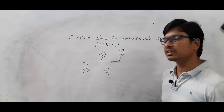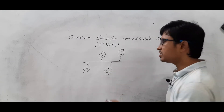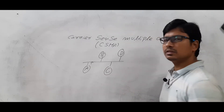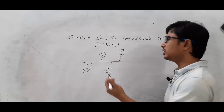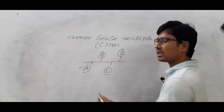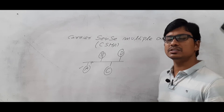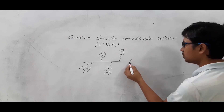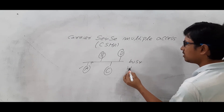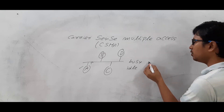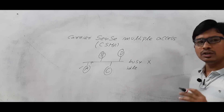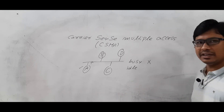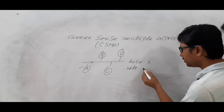If any node wants to transfer the data to any other node, first they need to sense the channel. If the channel or transmission medium is free, then only the node is allowed to transfer the data. Whenever you are sensing the medium or channel, you will get two cases: busy or idle. If it is busy, you will wait till the channel is again idle. If the channel is idle or free, then you will send the data.